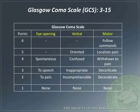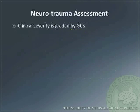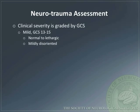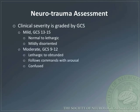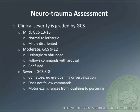The Glasgow Coma Scale is a useful standardized grading system for neurological status, with a chart illustrating its components and relative points. GCS grades may be broken down into mild trauma (13–15), moderate trauma (9–12), and severe trauma (3–8). A GCS of 8 or less is considered coma.